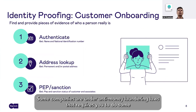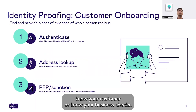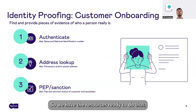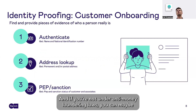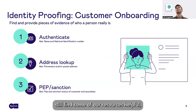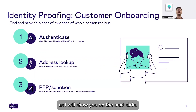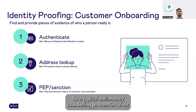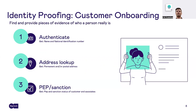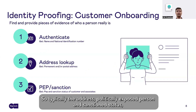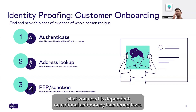Some companies are under anti-money laundering laws that require you to do know-your-customer or know-your-business checks, and we have the resources ready to do that. A typical anti-money laundering process involves retrieving additional information after an authentication — typically the address, politically exposed person status, and sanctions status. What you need is dependent on national anti-money laundering laws, so you can check that for your market.